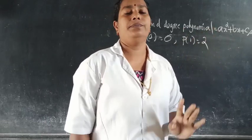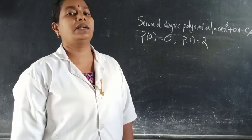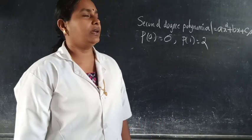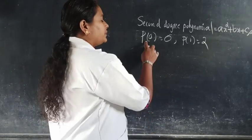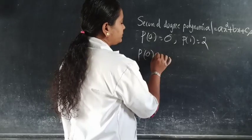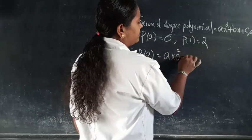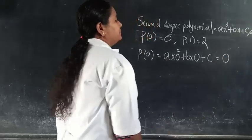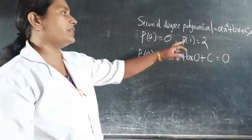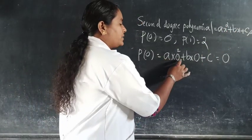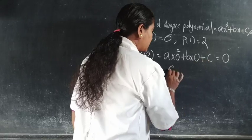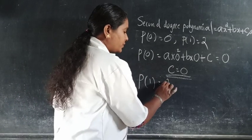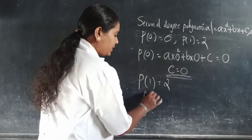Generally, a second degree polynomial is p(x) = ax² + bx + c. Applying the condition p(0) = 0: substituting x = 0 gives a(0²) + b(0) + c = 0, so c = 0. Now applying the second condition p(1) = 2: substituting x = 1 gives p(x) with x equals 1.